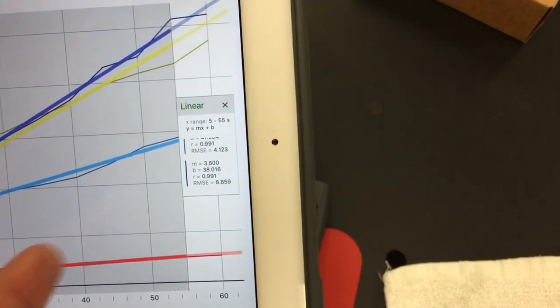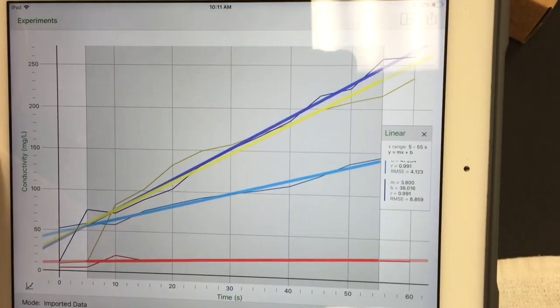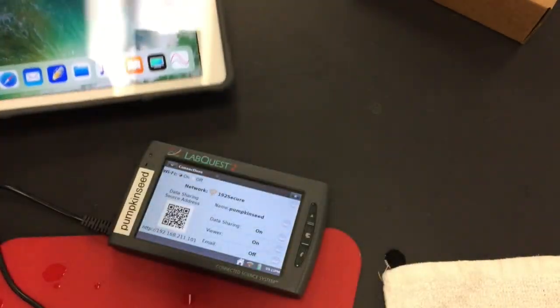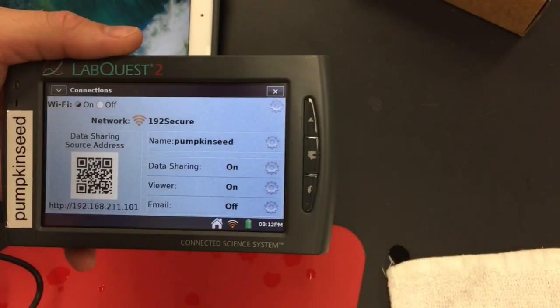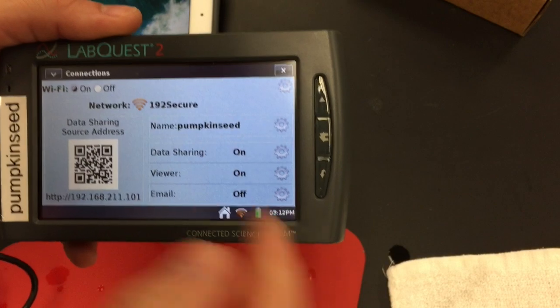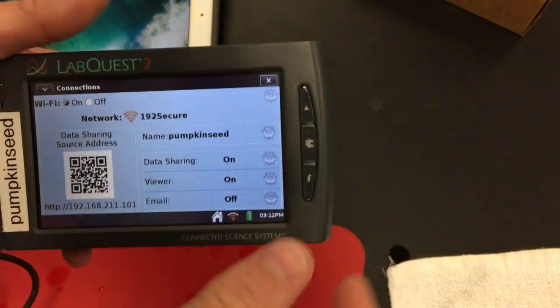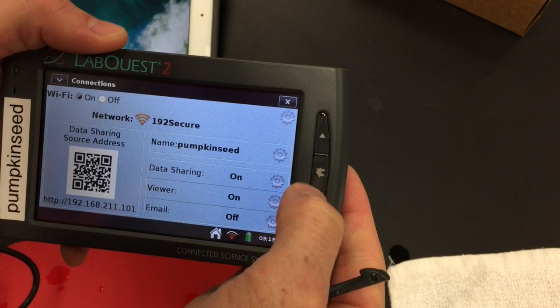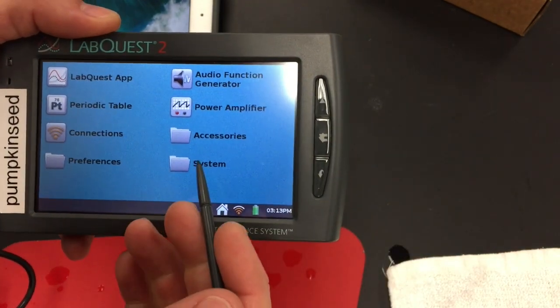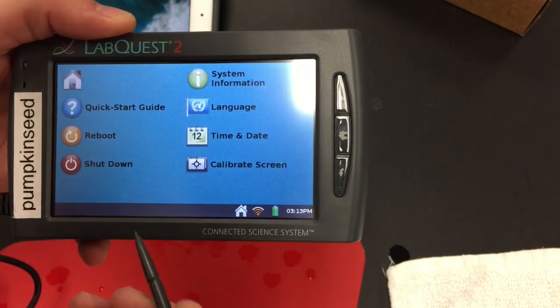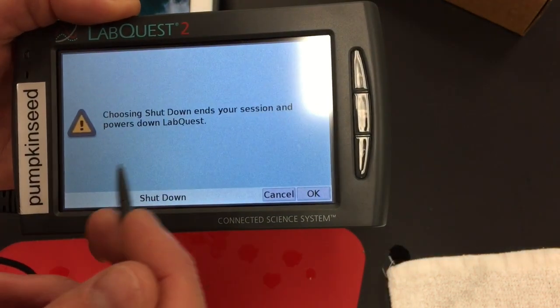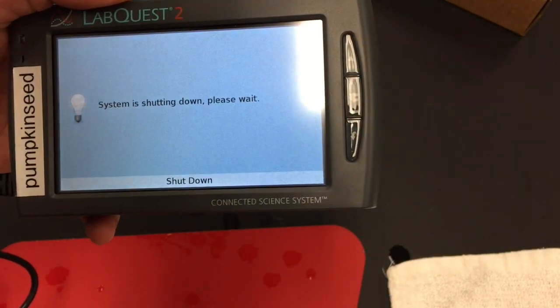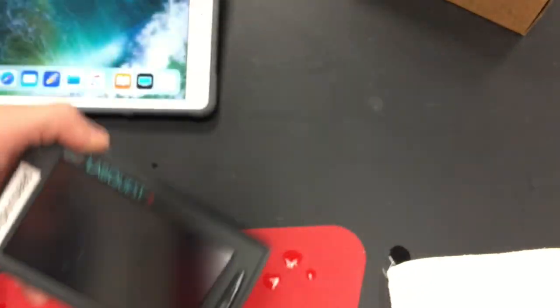One more thing I need to show you is how to turn off the Lab Quest device. You turned it on by hitting the power button, but you're going to turn it off a little differently. Hit the home button and then on-screen hit System, then Shut Down, then OK. Once that's happening you can remove the conductivity meter and plug that back in.